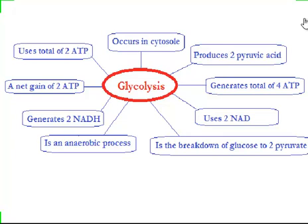What is the process of glycolysis? It is the breakdown of glucose to two pyruvate. Is it an anaerobic or aerobic process? It is an anaerobic process, because throughout the entire process we saw that no oxygen was used. Does it generate any NADH? Yes — during the process of glycolysis, two NADH are generated.